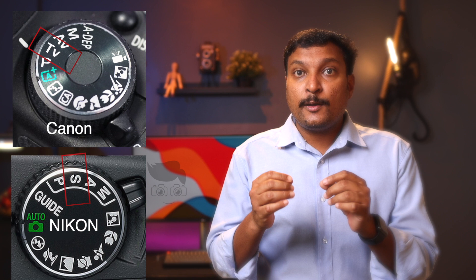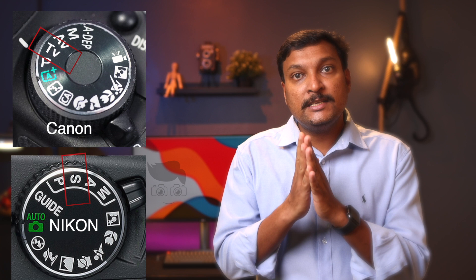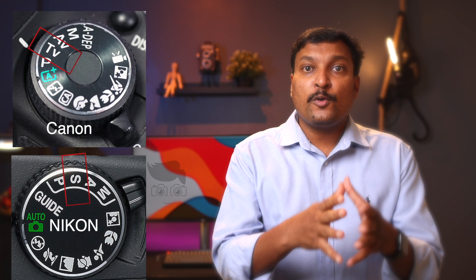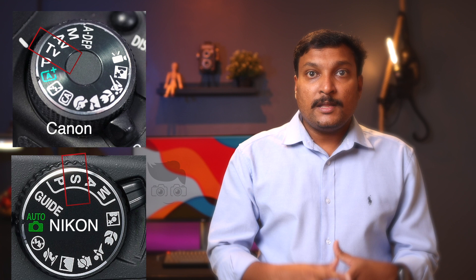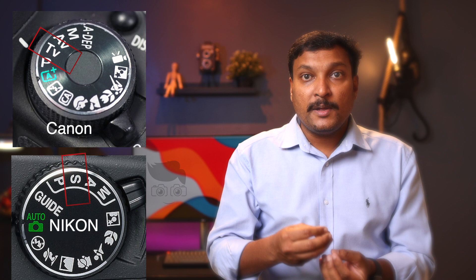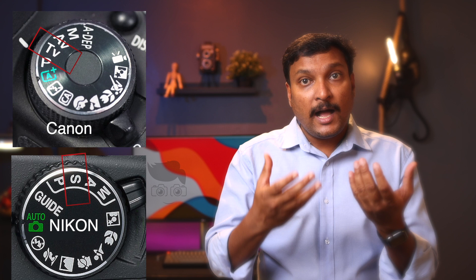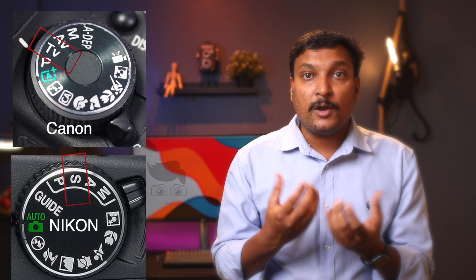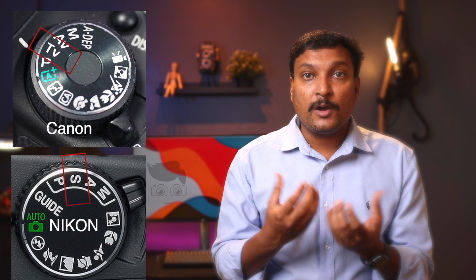The third mode is TV — time value — also known as shutter priority mode. In this shutter priority mode, shutter control is in your hands, while the aperture, ISO, and white balance are handled by the camera. We can use this mode for waterfalls and sports photography, where the camera automatically adjusts the other settings.